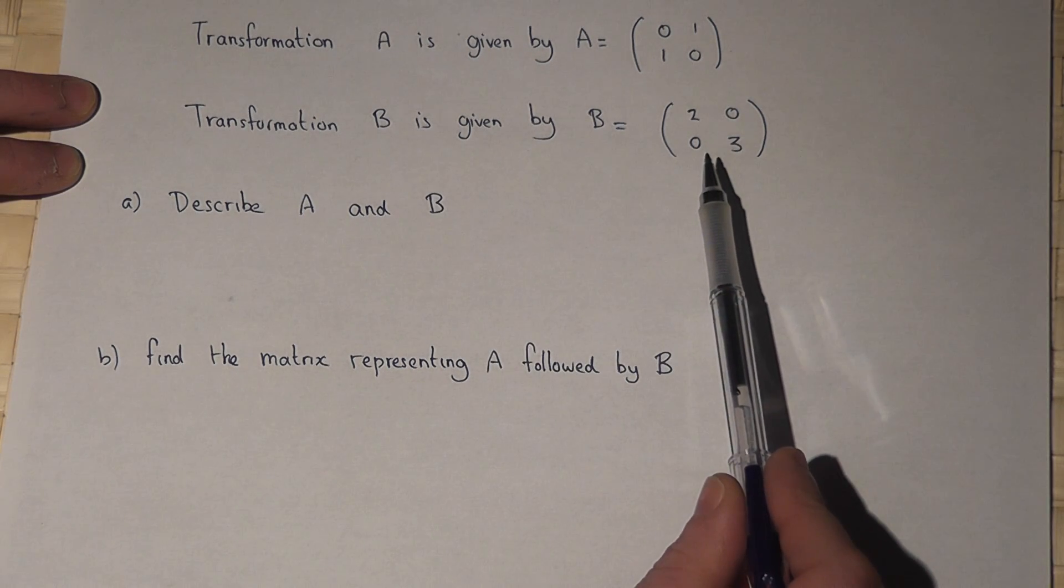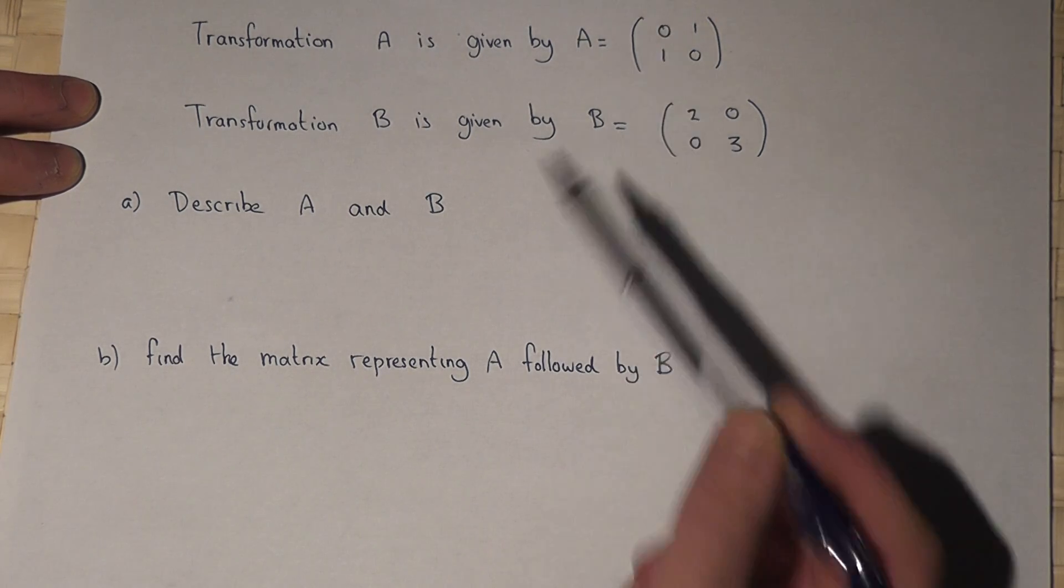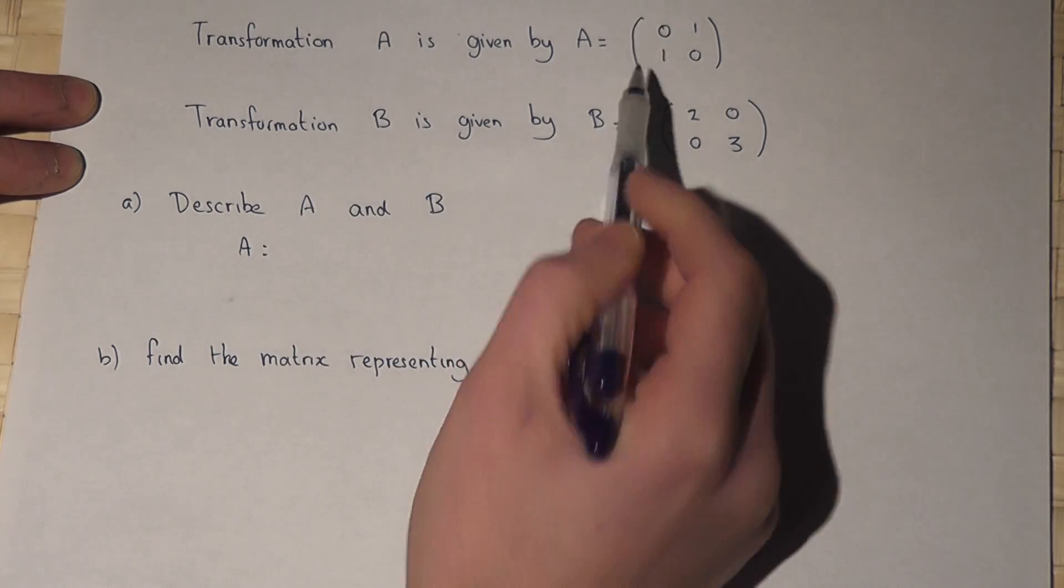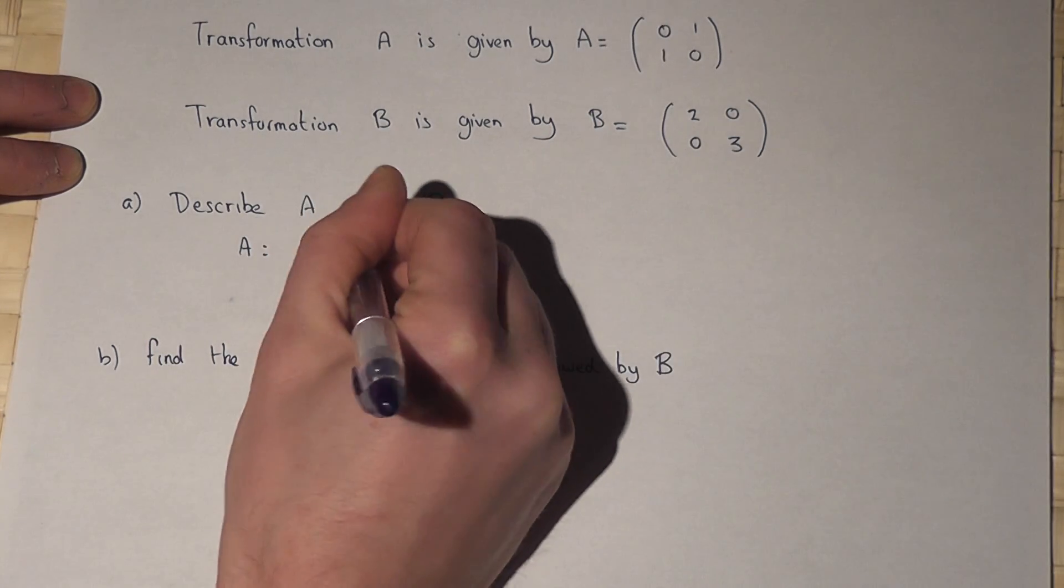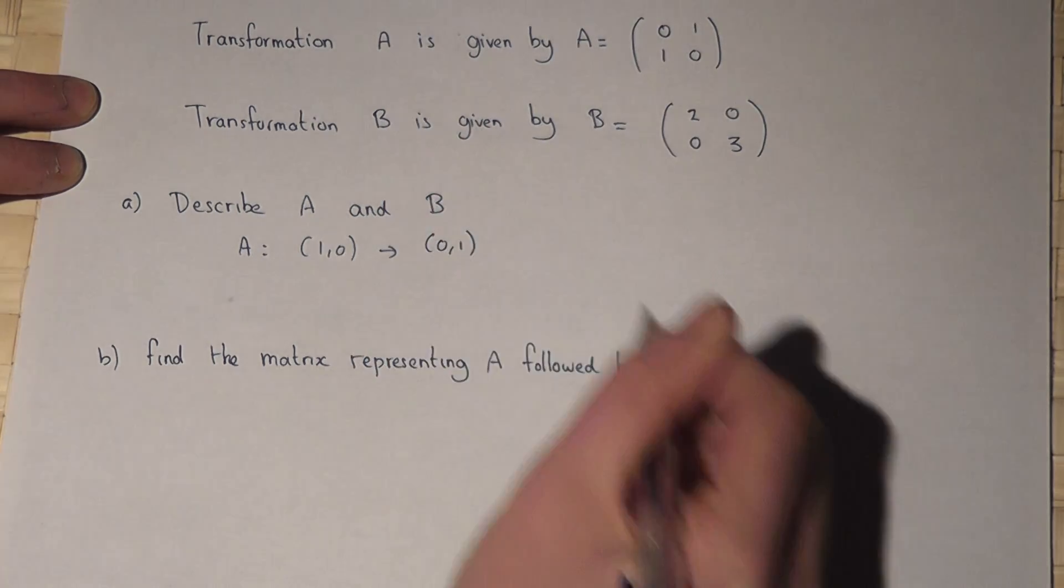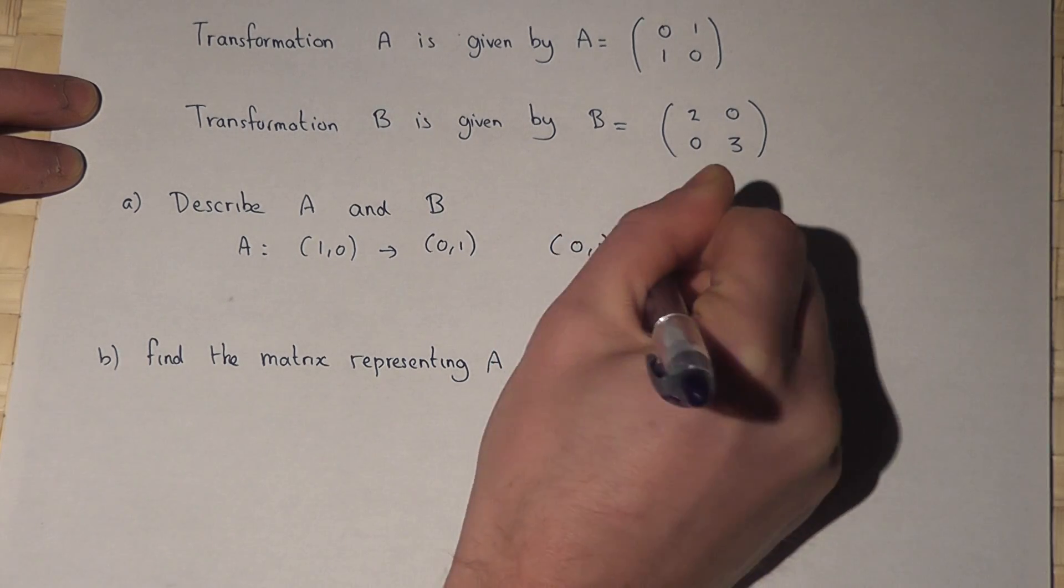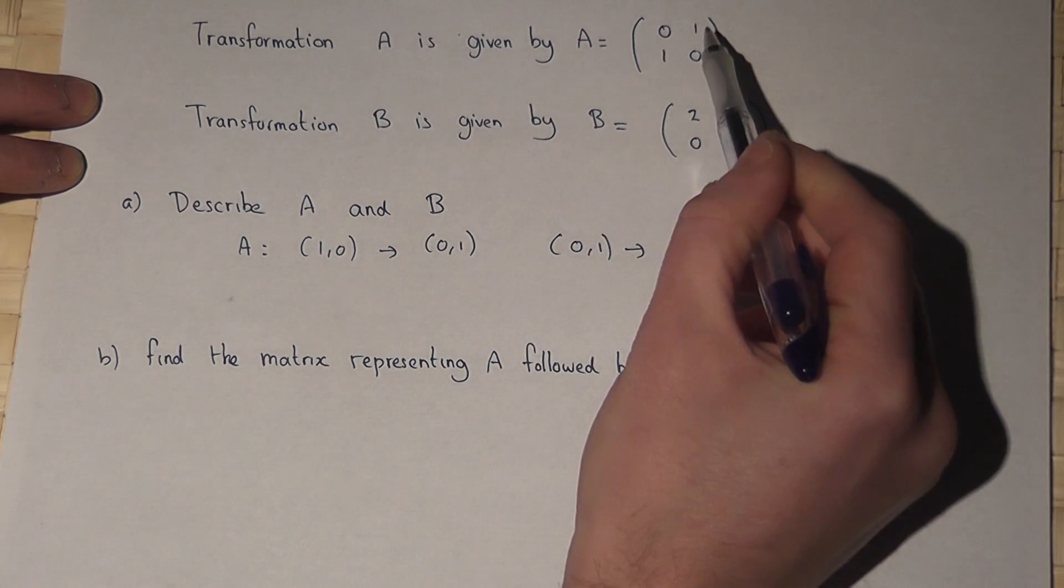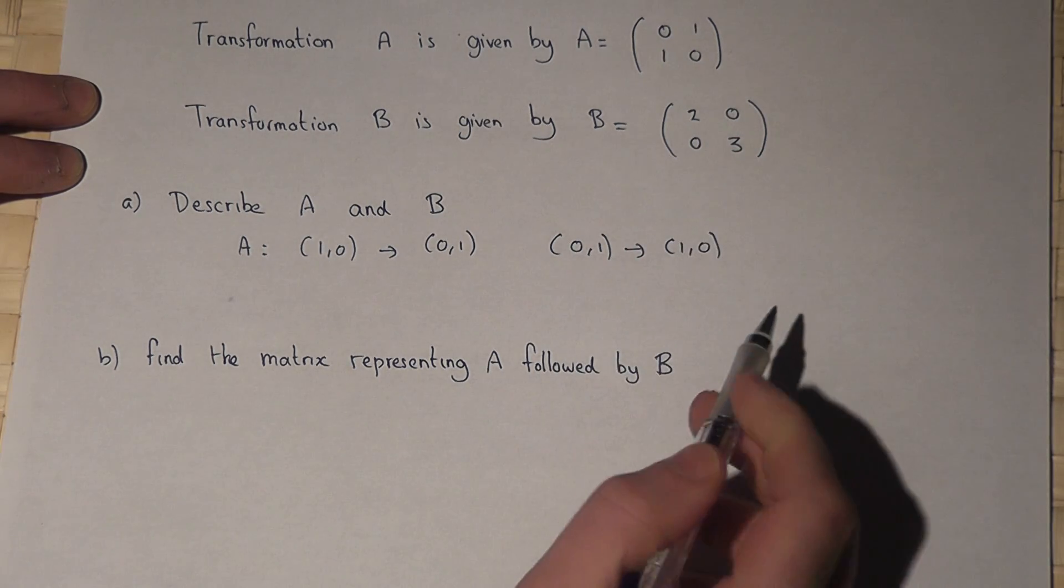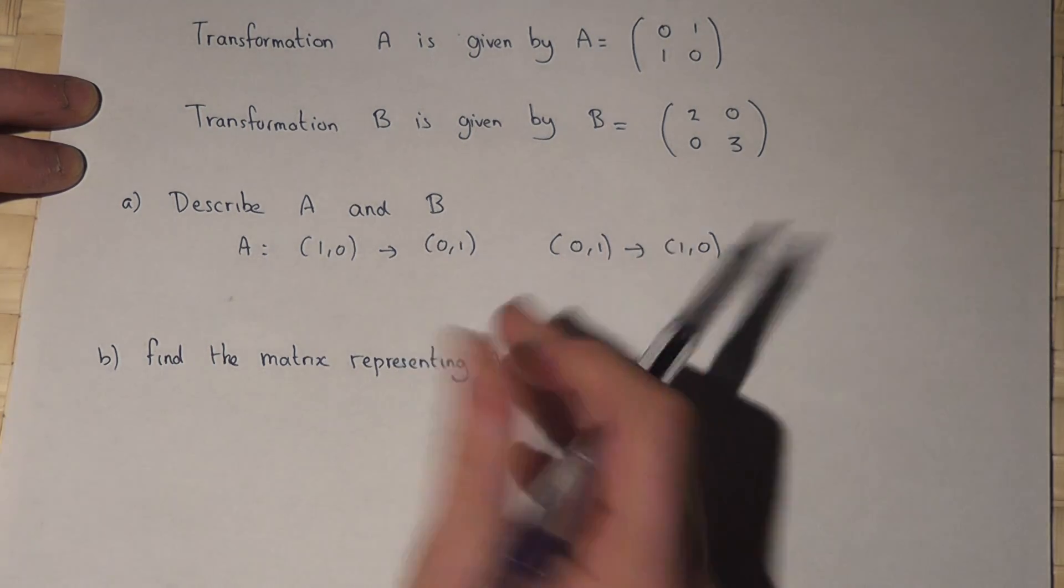When we have a matrix, the first column shows what happens to the coordinate (1,0). If we look at matrix A, the coordinate (1,0) has been mapped to (0,1), and the second column tells what happens to the coordinate (0,1), which has been mapped to (1,0). We can see how the x coordinate and y coordinate have swapped around.